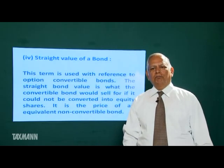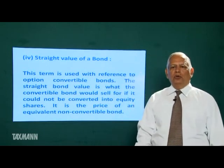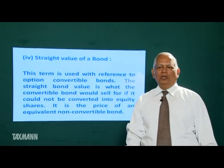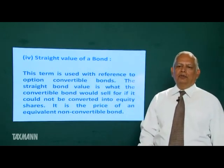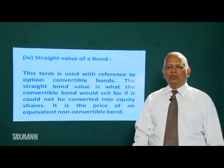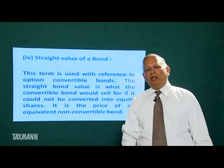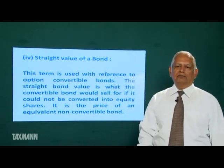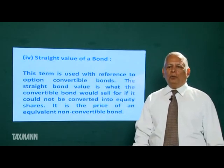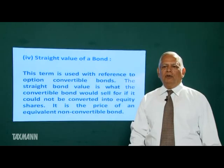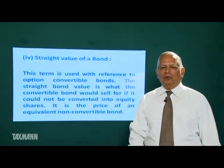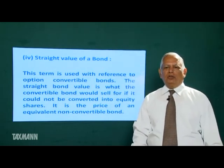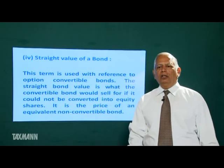The straight value of the bond is a term used with reference to option convertible bonds — that is, bonds which can be converted into equity shares at the option of the bond holder. The straight value of the bond is what the convertible bond will sell for if it could not be converted into equity shares. It is the price of an equivalent non-convertible bond.